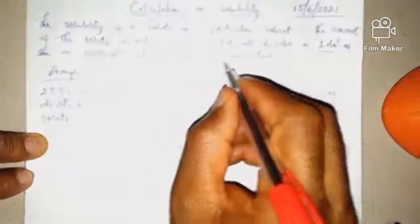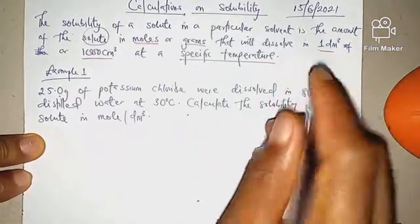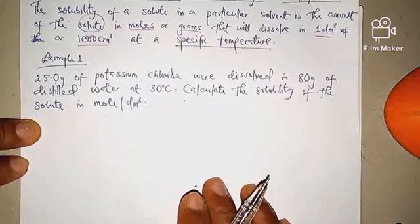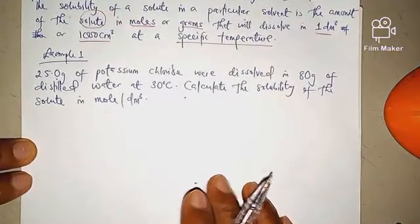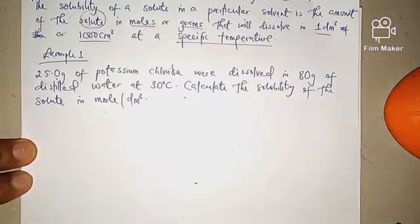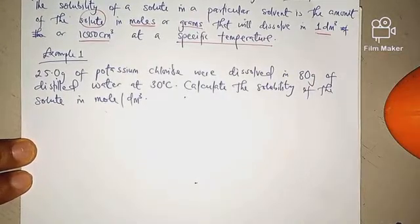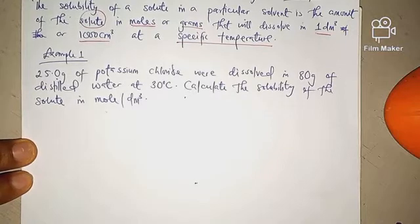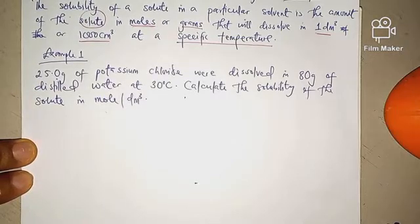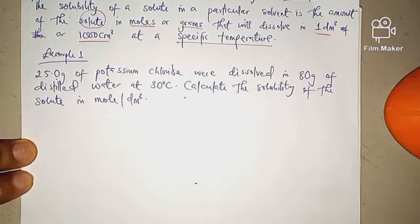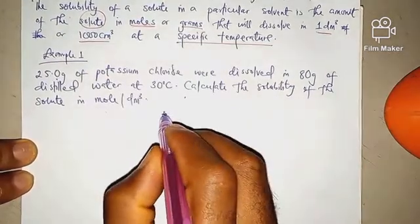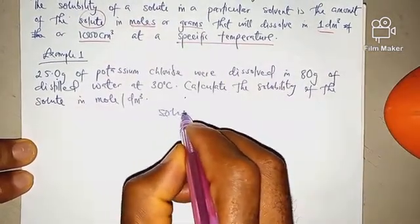Solubility works with a specific temperature. We have a question here which we're going to use as our first question. It says that 25 grams of potassium chloride were dissolved in 80 grams of distilled water at 30 degrees centigrade. Calculate the solubility of the solutes in moles per dm³.